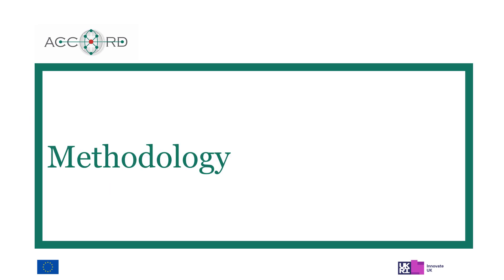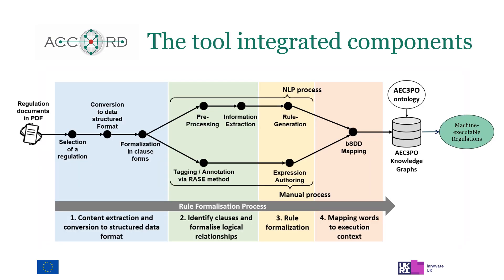Now we will talk about the methodology behind the tool. The tool covers the entire formalization process, from uploading a PDF file of a regulation by the user, to obtaining the result through a Resource Description Framework, or RDF graph, which is published to an external rules database as a machine-executable regulation. The tool integrates the following components: a building compliance ontology, a building compliance rule language or BCRL language, and a building smart data dictionary, BSDD. The tool also comprises both a manual and an automated annotation process using natural language processing techniques for information extraction and rule generalization from textual regulatory data.